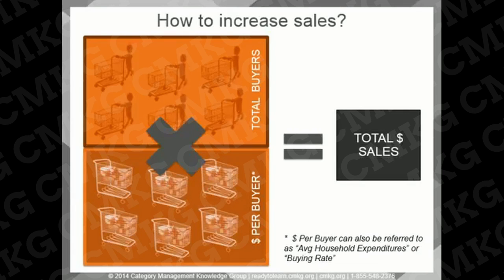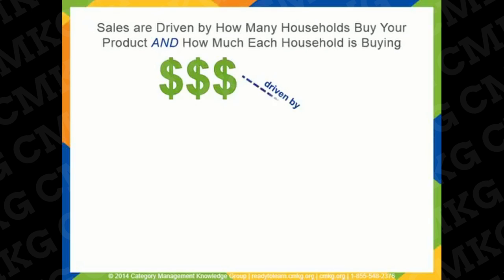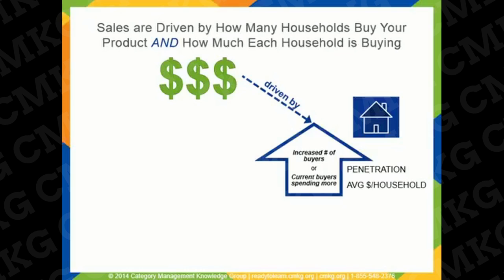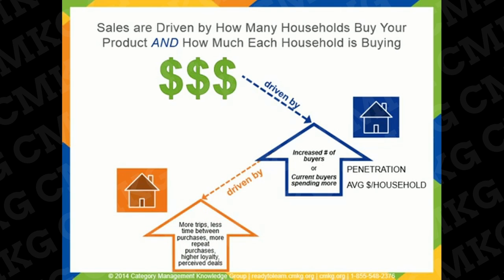This should better explain how these consumer measures impact dollar sales. If volume is up or down, it's driven by either the number of buyers increasing or decreasing — also known as penetration — or it's driven by buyers spending more or less dollars, or average dollars per household, or it's driven by a combination of both of these data measures shifting. The next set of consumer behavior measures give insights into what drives consumer behavior, which ultimately affects sales. This includes measures like repeat purchases, purchase cycle, loyalty, and perceived deals.